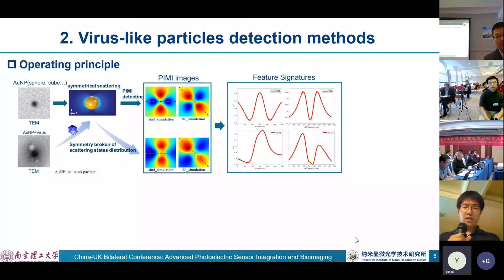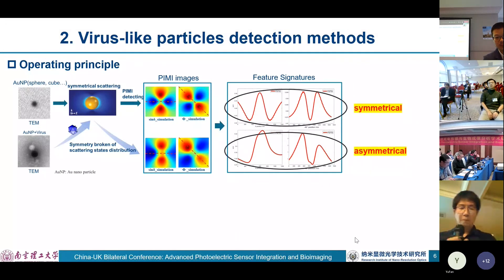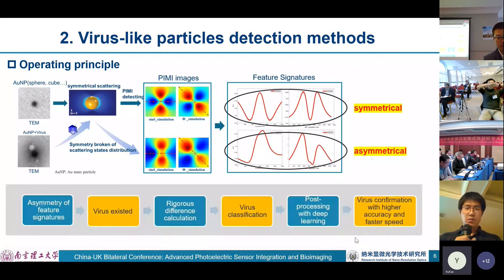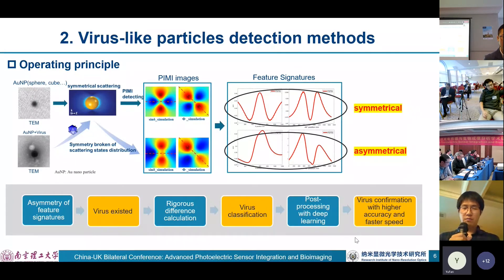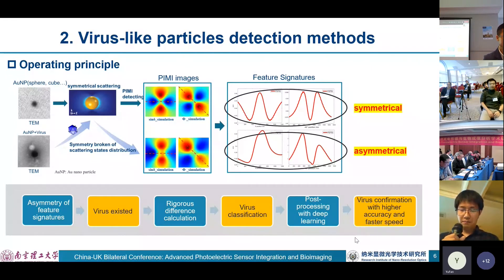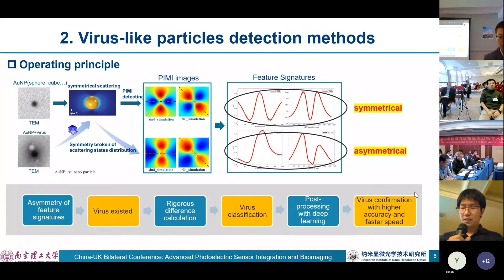The upper figures are symmetric and the bottom figures are asymmetric. So if we can detect the symmetry of feature signatures, we can make a preliminary conclusion that a virus is present. With the assistance of rigorous difference calculation, we can make virus classification. Finally, we can do post-processing with deep learning and make virus confirmation with high accuracy and fast speed.